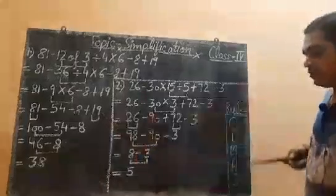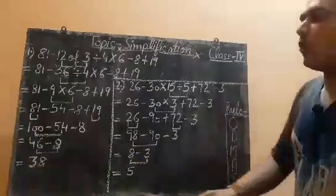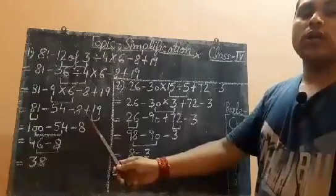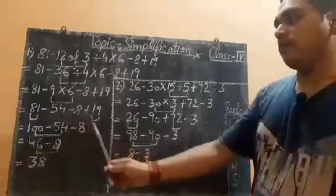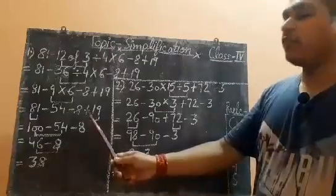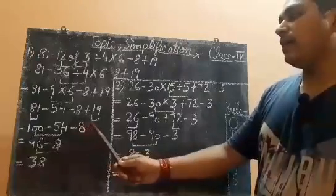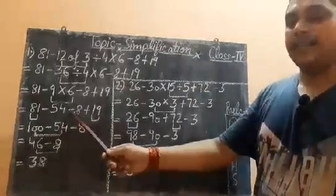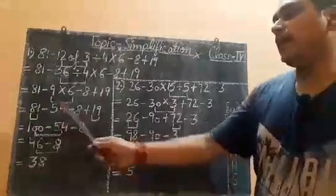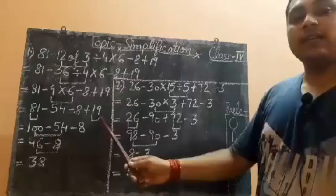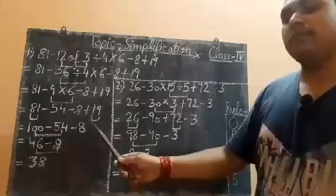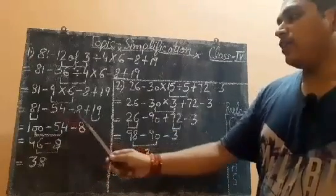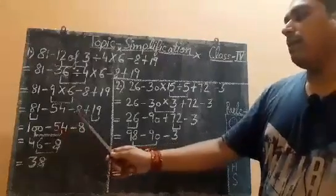Now after multiplication, what you have to solve is the addition part. Now which two numbers are to be added? For that you have to see the sign placed before the number, not after the number. You will not add 8 and 19 because before 8 there is a minus sign. So you have to add 81 and 19 — both have a plus sign before them. So 81 plus 19 will be 100, and the rest is minus 54 minus 8.